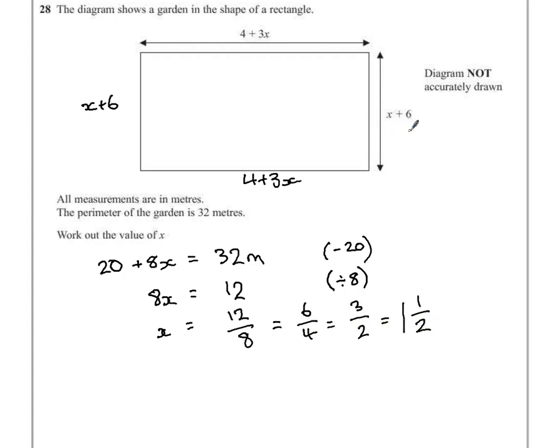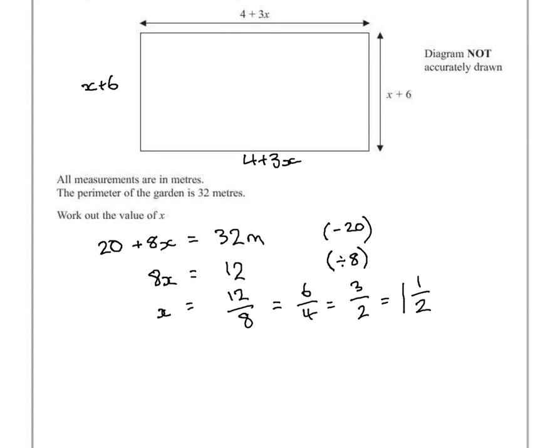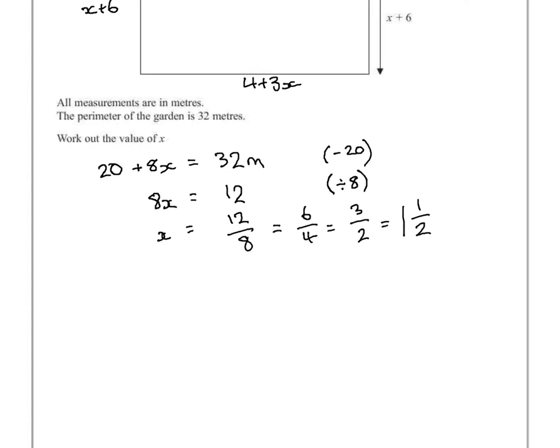Let's just double check to see if this works. It's always a good idea after you've solved an equation to see if it still fits into the equation. We have 20 add 8 times 1 and a half. Well 8 times 1 and a half is 12. So 20 add 12 equals 32. It matches our original equation. So x must be equal to 1 and a half. Therefore I'm going to underline that as my final answer.